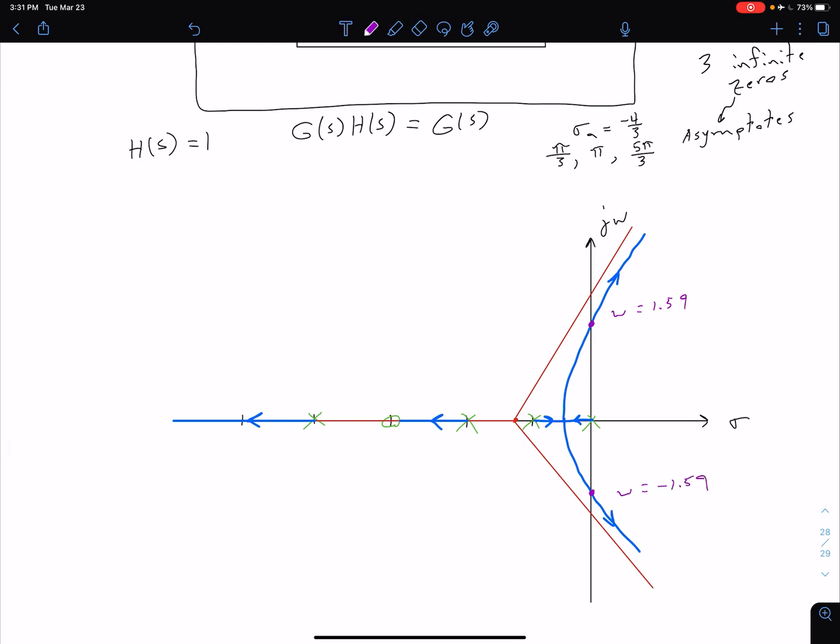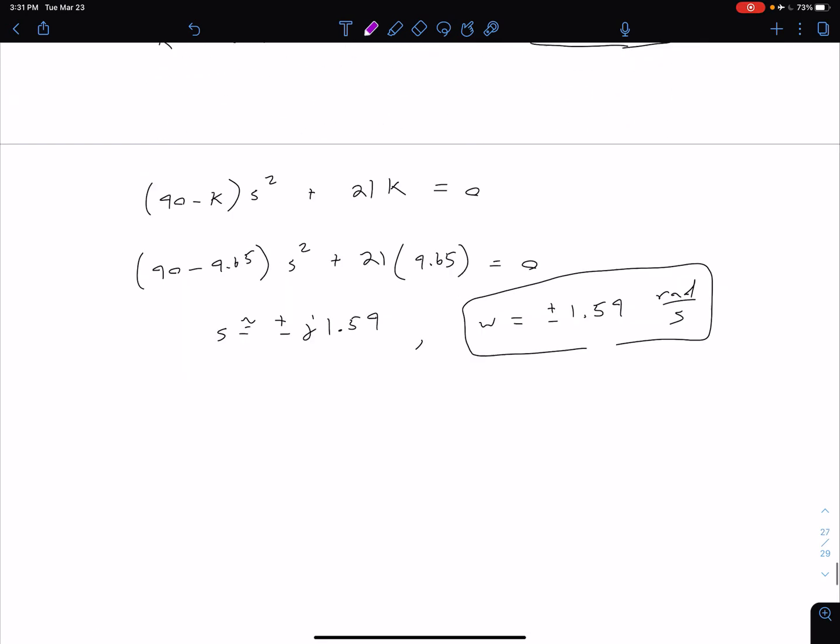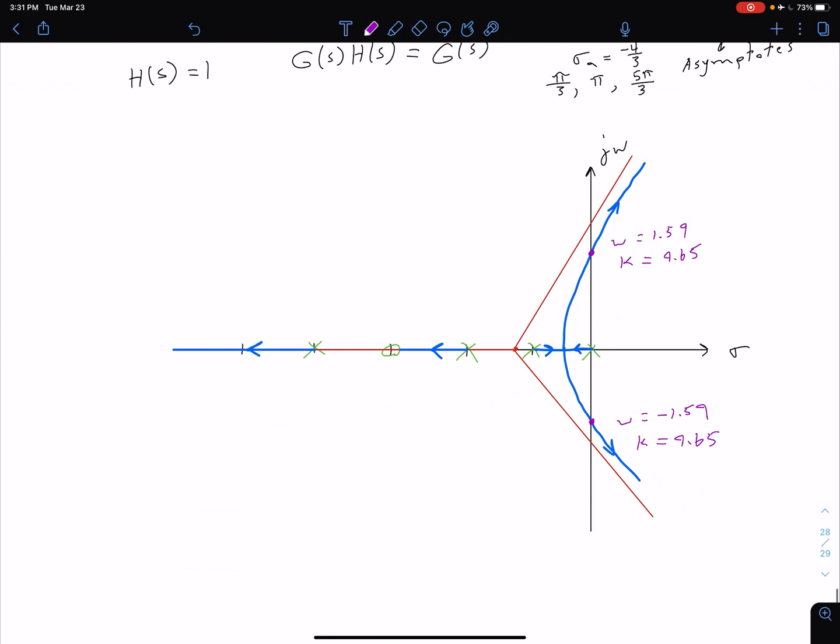What we're saying then is that this point right here and this point right here, we have omega equals 1.59. Remember, this is j-omega value. And here we have omega equals negative 1.59. We also have a corresponding gain value. Our gain is going to be zero at the starting point of our poles. It's increasing as we move along these paths. So we're saying when we're at these points, we have our gain of about 9.65. So that's what this information looks like when we combine it with our root locus for our system.